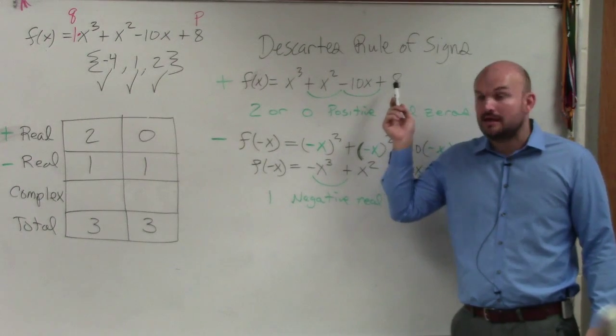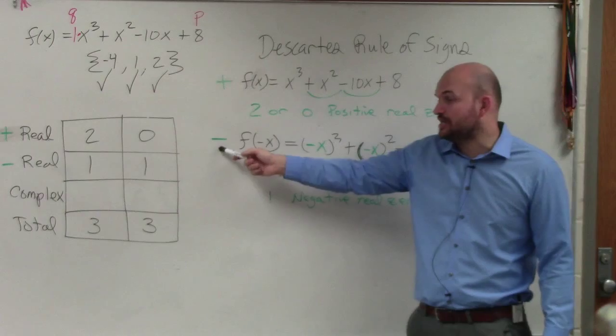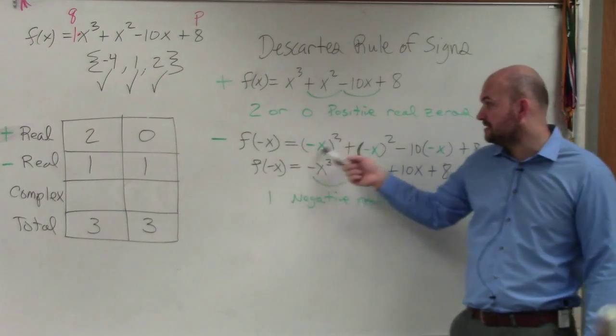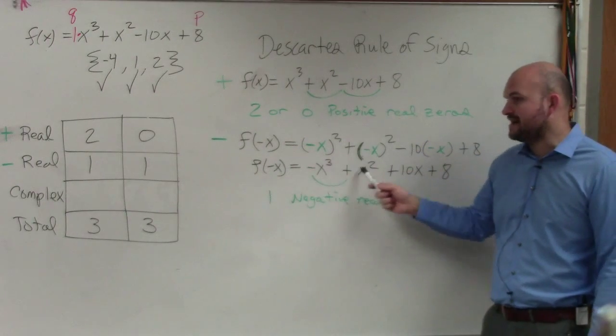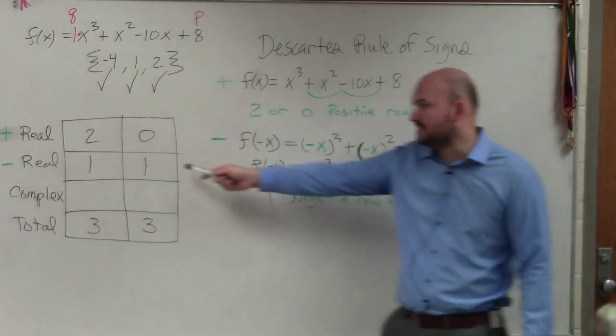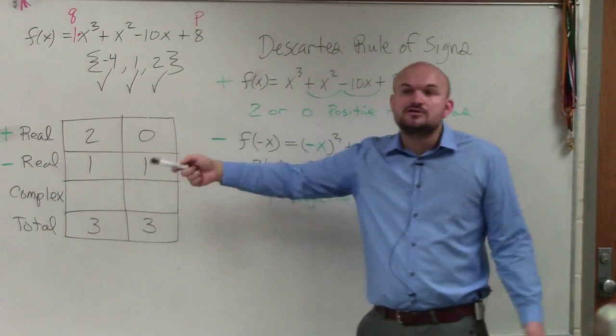No? Yes? Then, I found the negative sign changes by doing f(-x). Plugged in -x, simplified, I found one sign change. That tells me the number of negative real zeros.